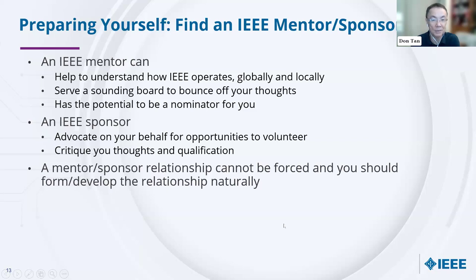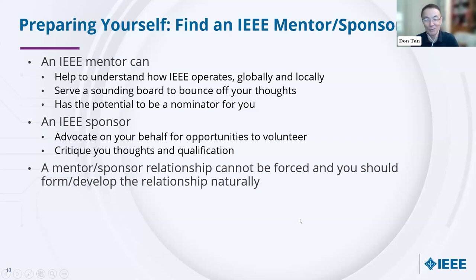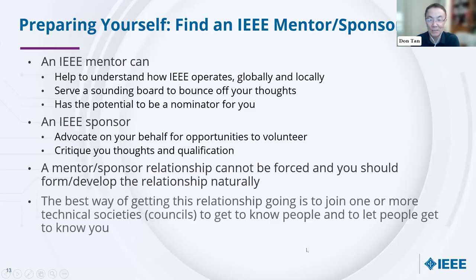A mentor and sponsor relationship cannot be enforced — it needs to develop naturally, because the two people need chemistry to share thoughts freely. Sometimes formalized mentor programs simply do not work if the two people are forced together and don't click. The best approach is to volunteer to join one or more societies, join your local chapters or sections — that is the best way to get to know people within IEEE.